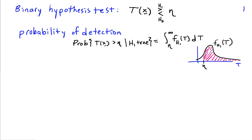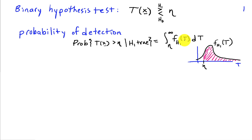We'd like our test statistic to give us good performance. We can characterize performance by quantifying the probability of a correct detection — the probability that we decide H1 is true when H1 is really true. That's the probability that our test statistic is greater than the threshold eta given that H1 is true. If we have a probability density function for the test statistic, f_H1 of T, we can express this as the integral from eta to infinity of the PDF with respect to T — the area under the density from eta to infinity.